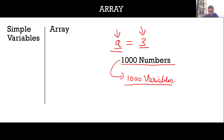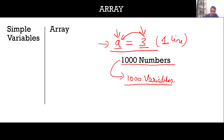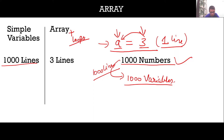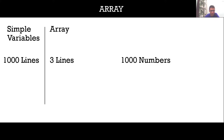If storing a number into a variable takes one line of code, then to store 1000 numbers we would require 1000 lines of code. But with arrays, if we combine arrays with loops, it will take only three lines of code to store all 1000 numbers into a single array. We can see how drastically we have reduced the size of our program from 1000 lines to just three lines. This is the advantage of using an array over simple variables.